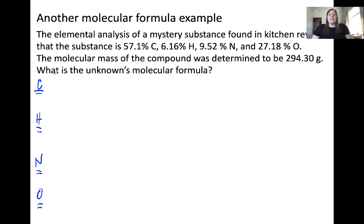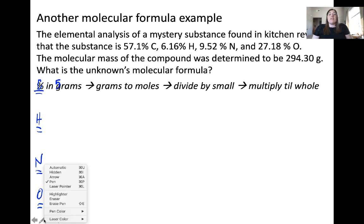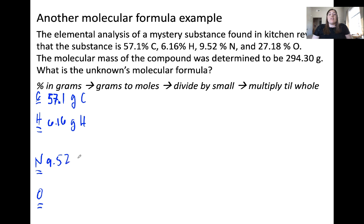We're going to use our empirical formula poem: percent to mass, mass to moles, divide by small, multiply to a whole, to solve this problem. First step, percent in grams. We're going to start with our percentage data in grams. Convert that by assuming a 100 gram sample: 57.1 grams of carbon, 6.16 grams of hydrogen, 9.52 grams of nitrogen, and 27.18 grams of oxygen.